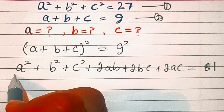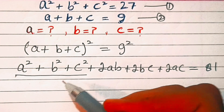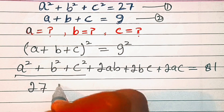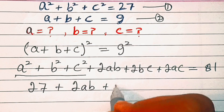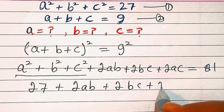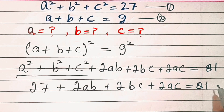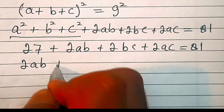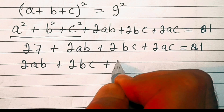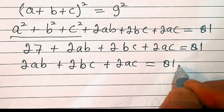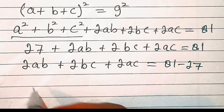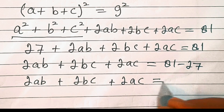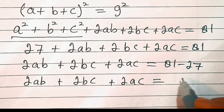Now look at a² + b² + c² — its value is already given in equation one. So let's substitute this value. This gives 27 + 2ab + 2bc + 2ac = 81. Now let's bring 27 to the right hand side: 2ab + 2bc + 2ac = 81 − 27 = 54.